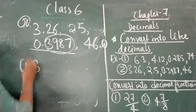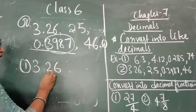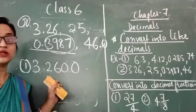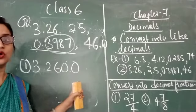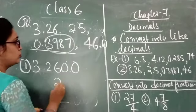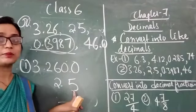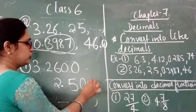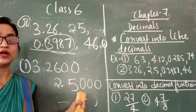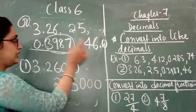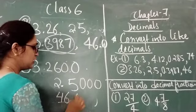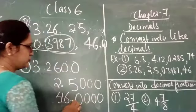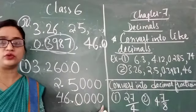So let us equalize. The first one is 3.26 — we have to make it 4 decimal places, so put 2 zeros, it becomes 3.2600. The second one is 2.5 — decimal place value is 1 only, so put 3 zeros, it becomes 2.5000. Next, 46.0 — we have to make it 4, so put 3 zeros, it becomes 46.0000.